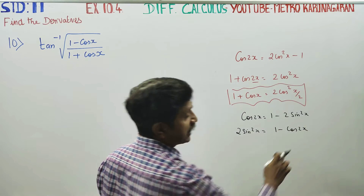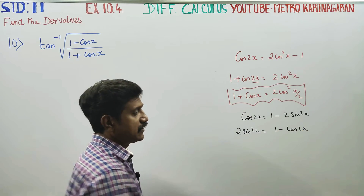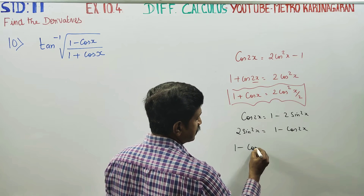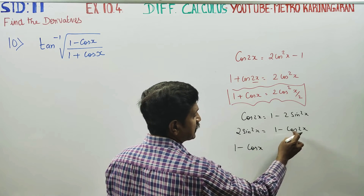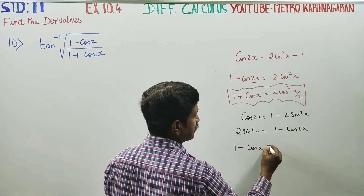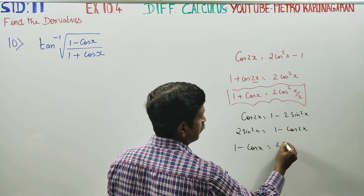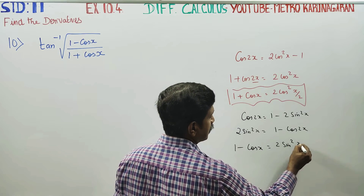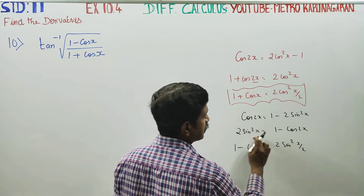Applying the formula with the appropriate angle: 1 minus cos x is equal to 2 sin squared (x/2).